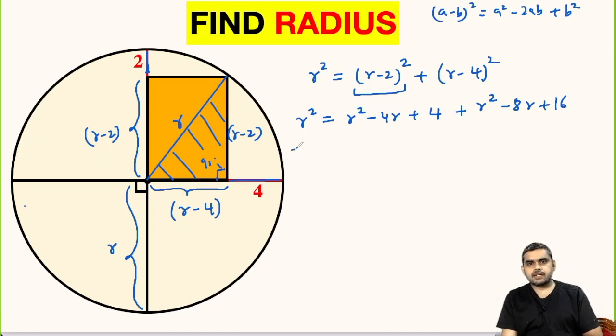We can subtract r squared from both sides. This will get cancelled and we will have 0 on the left hand side. This will also get cancelled and we will have 1 r squared here, minus 4r minus 8r will be minus 12r, then 4 plus 16 is 20.